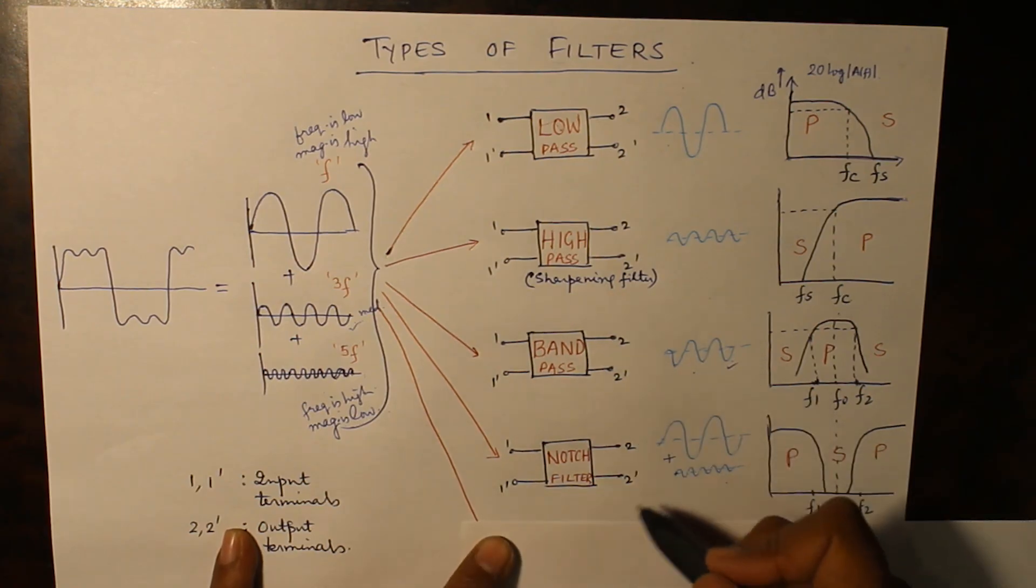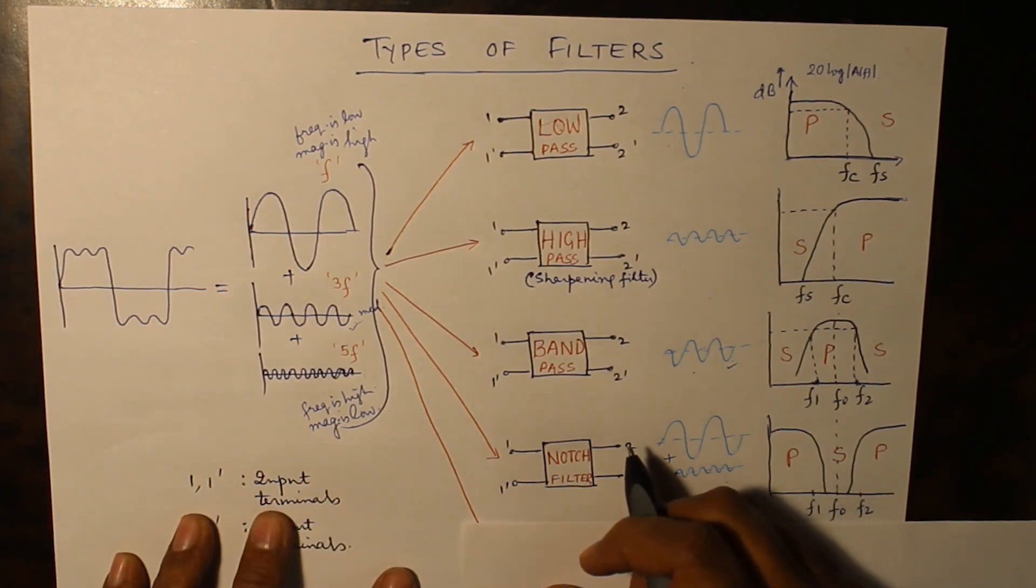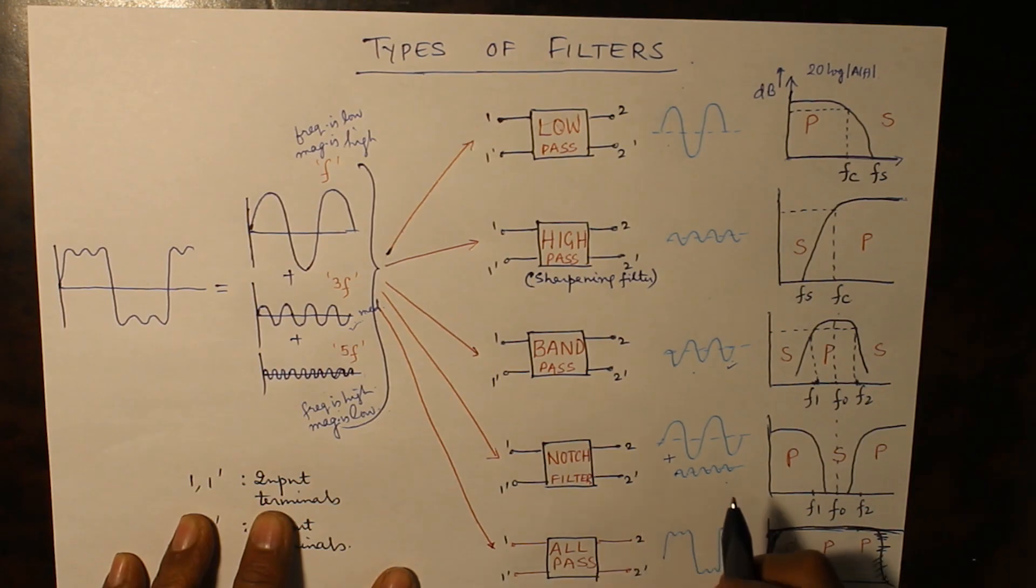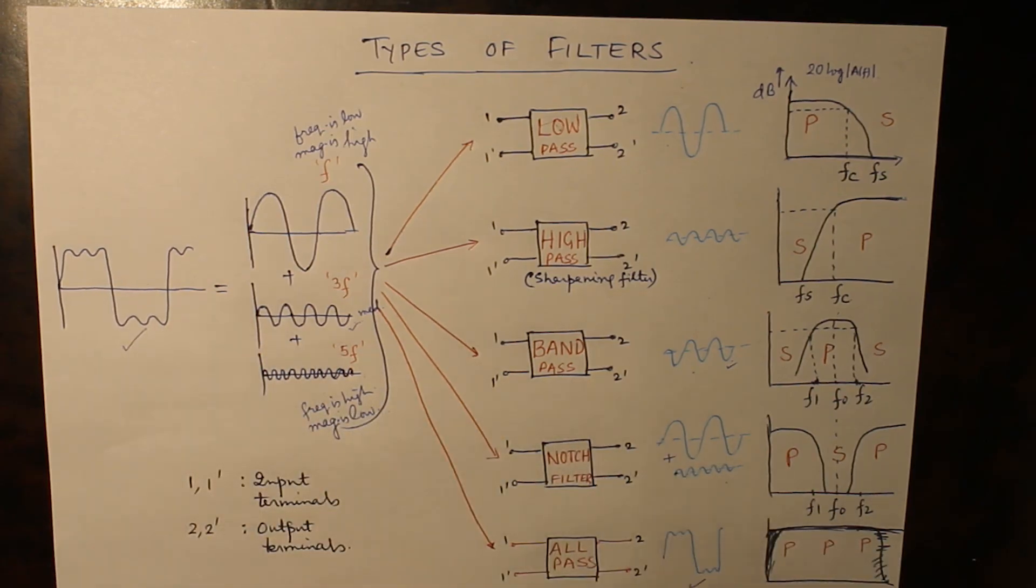So these are the four basic kinds of filters. There is another class of filter which is hardly used as an application, that is known as all-pass filter. In an all-pass filter basically the whole signal waveform will pass through as it is and the frequency response will be completely flat for frequency, the magnitude is completely flat.